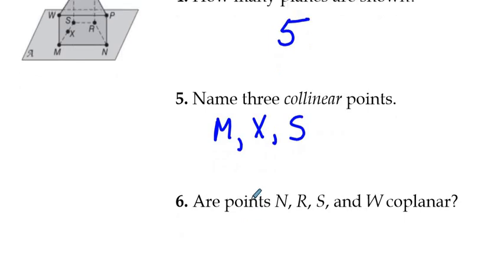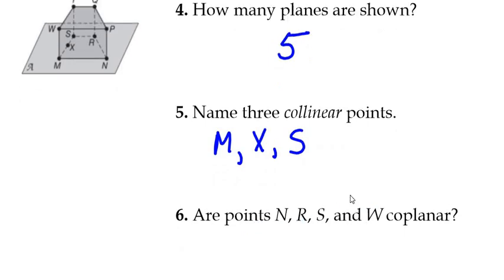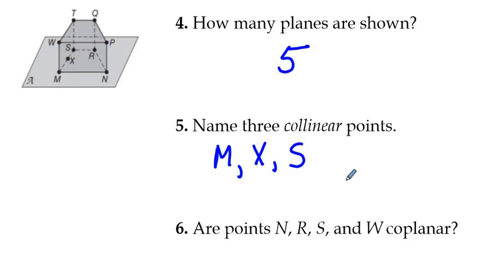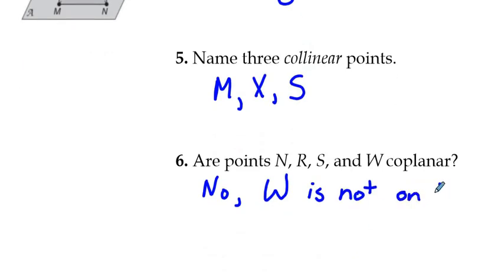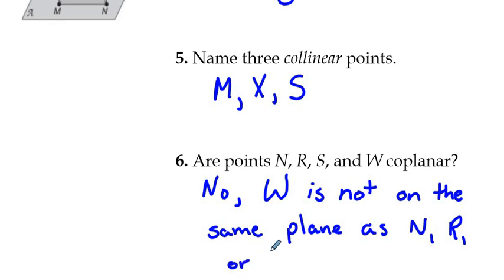And then the last example, R points N, R, S, and W coplanar. So let's look and find out the definition of coplanar points, points that lie on the same plane. Let's look. N, R, and S are on the same plane. Is W on the same plane? No, it is not. So your answer is no, because W is not on the same plane as N, R, or S.